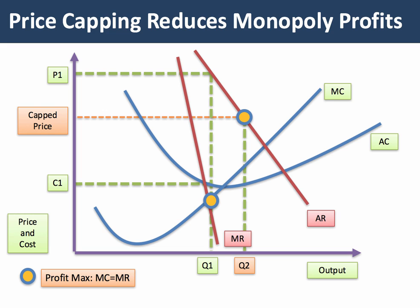Let me put in the cost now, at that higher output. That's the cost is C2. And you should be able to see now that the supernormal profit is lower than it was before.